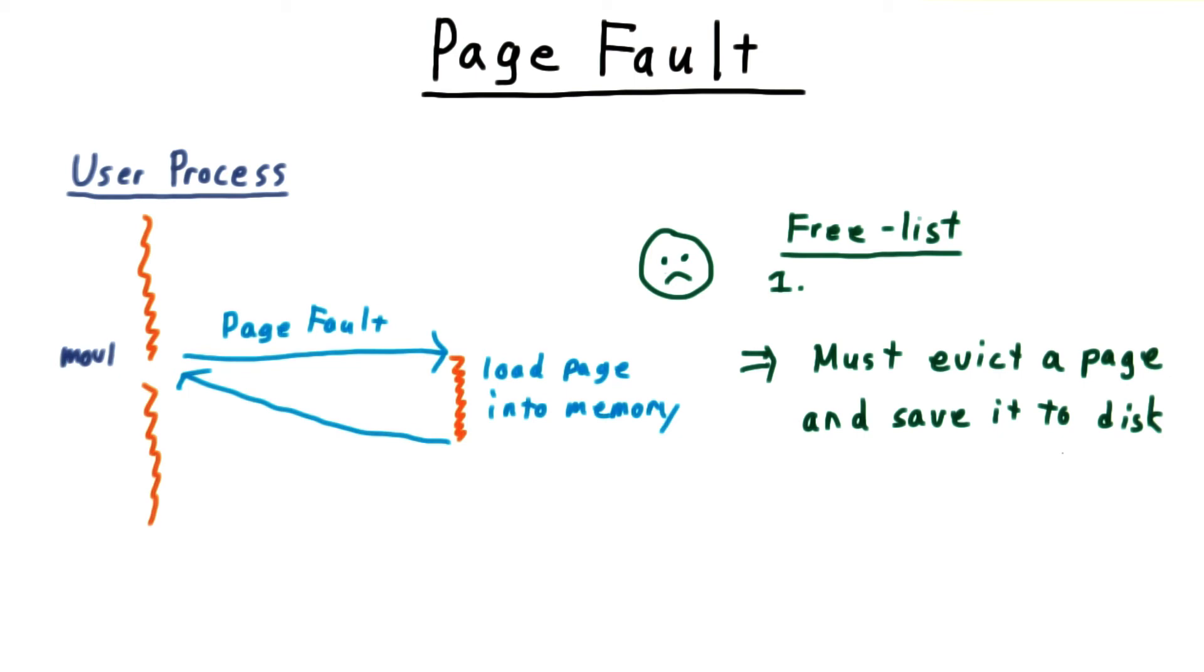For our purposes, it suffices to say that a page handler will pick a page that it doesn't think is likely to be used soon. This page is saved to disk, and then its physical memory can store the page that was created by the page fault.